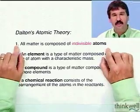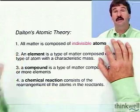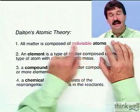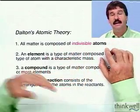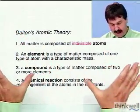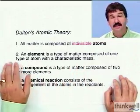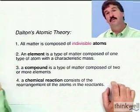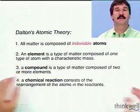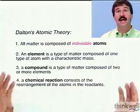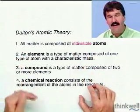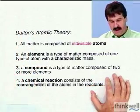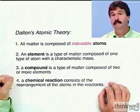Let's return to Dalton. Although he didn't get it completely right, he was pretty close. All matter is composed of indivisible atoms — that's true as long as we're in the realm of chemical reactions. But we do know atoms can be divided into protons and neutrons, which becomes the realm of nuclear reactions. An element being one type of atom with characteristic mass turns out not to be right because you can change the number of neutrons without affecting the overall charge. But it is true that a compound is composed of atoms of different types, and chemical reactions involve rearranging those atoms. Dalton, although not perfect, made a huge contribution in changing the way we think about our microscopic world.